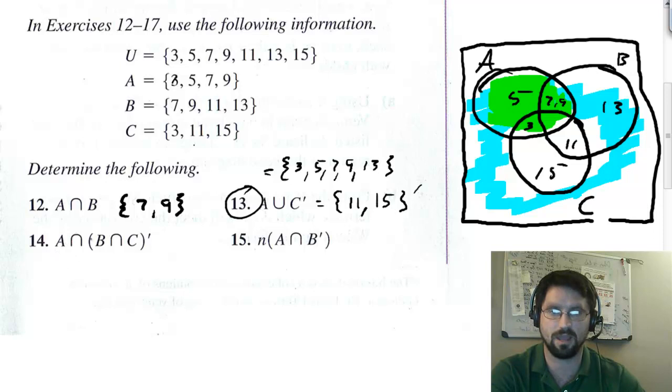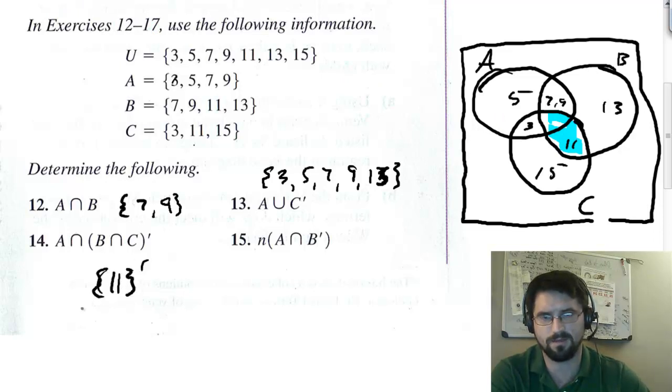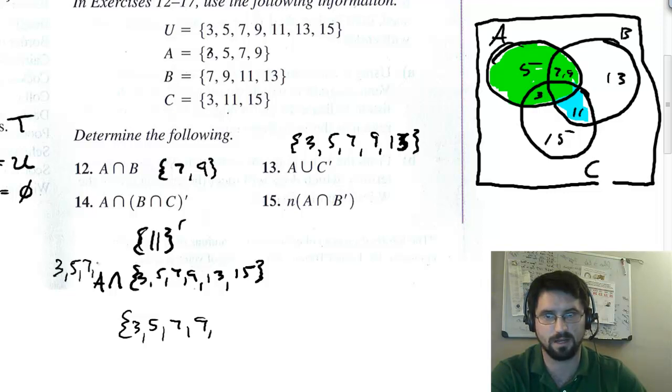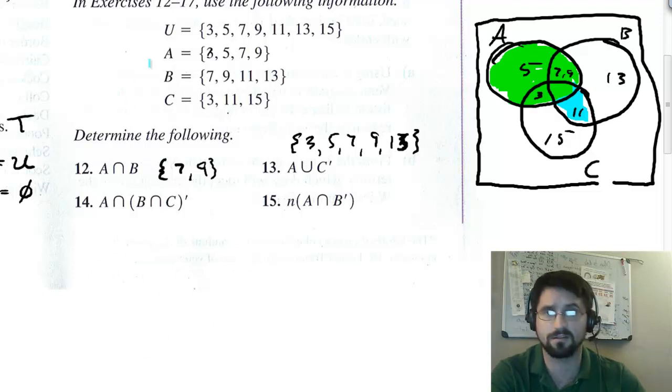Number 14. Number 14. It says A intersect B intersect C complement. So we're going to have to figure out what B intersect C complement is. So alright. Got to start with B intersect C. B intersect C is just 11. That's what they have in common. The complement of that is not 11. So not 11 is 3, 5, 7, 9. What does A, which is 3, 5, 7, and 9, have in common with this thing over here? Well, it has a 3 right there. It has a 5 there and a 7 and a 9, which are all in there also. So that's our answer there. 3, 5, 7, 9. You could also write it as, can you hear my bird? As A.